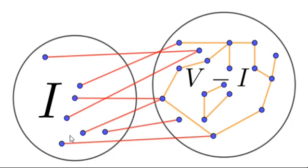As you can see in the left circle, edges are missing between blue vertices and this is the remaining set which is V minus I. Now ultimately we want to establish relation between independent set and vertex cover.